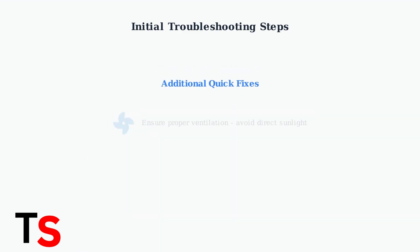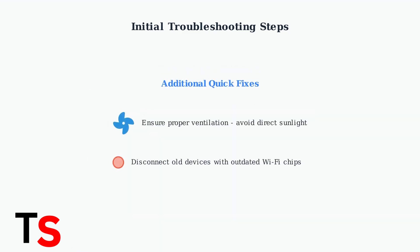Finally, make sure your gateway has proper ventilation and isn't placed in direct sunlight to prevent overheating. Also, if you have older devices with outdated Wi-Fi chips, try disconnecting them temporarily, as they may interfere with the gateway's operation.